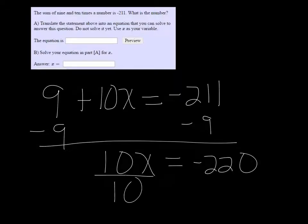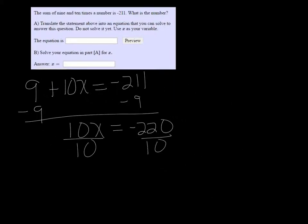Then divide both sides by 10, and x is equal to negative 22. So the equation would be 9 plus 10x equals negative 211, and our x is equal to negative 22.